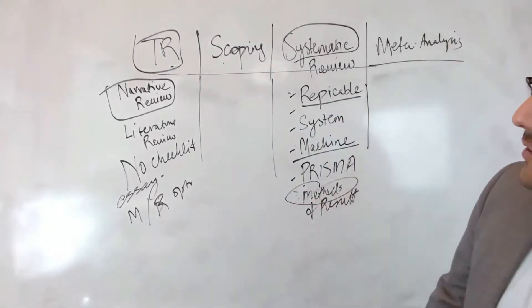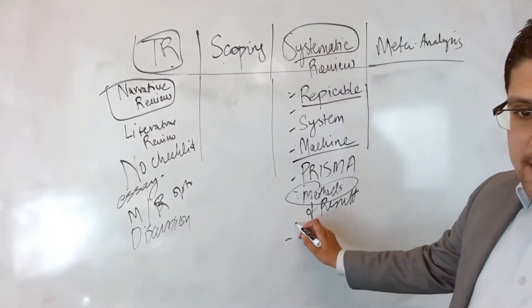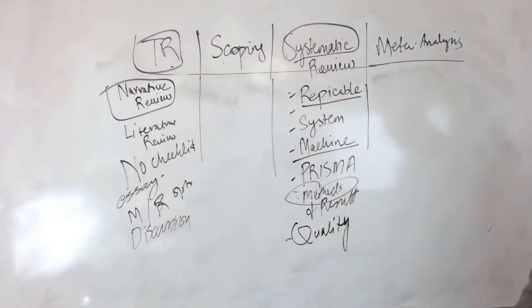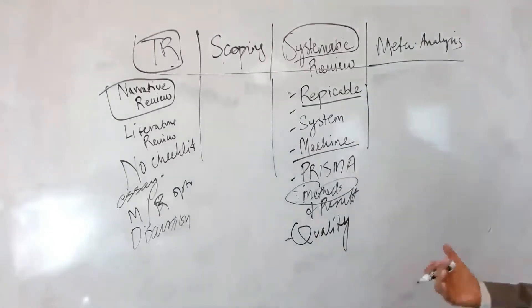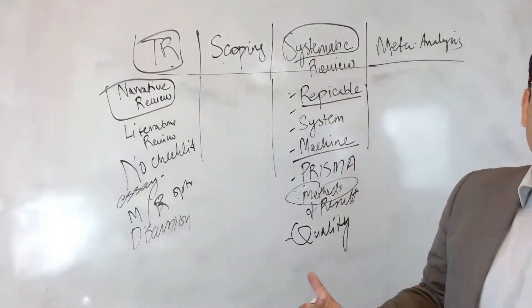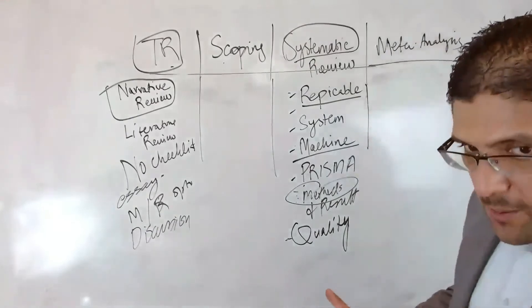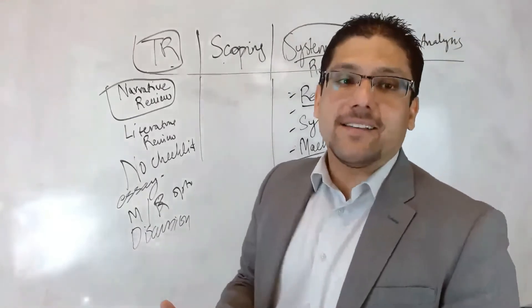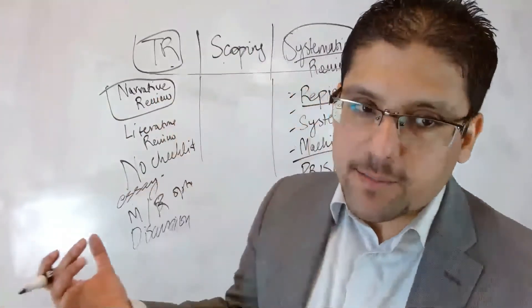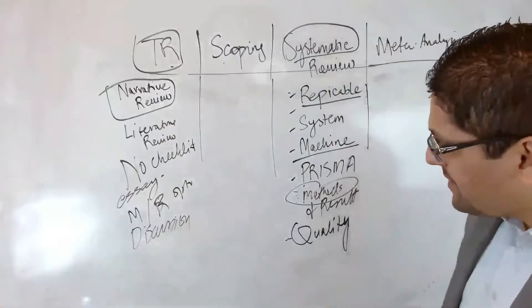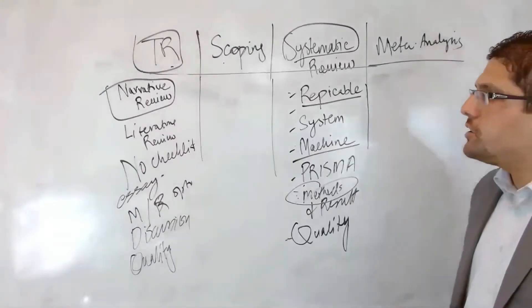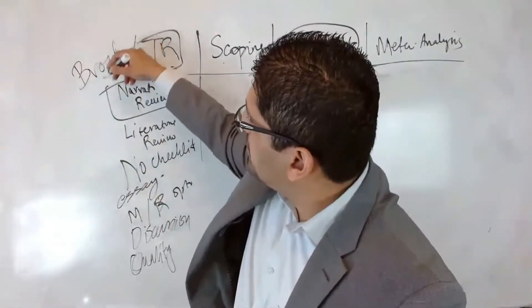The real focus in a systematic review is the method, while in a traditional review the real focus is the discussion. In a systematic review, you check the quality of each included study — keeping strong studies and removing weak ones. Remember this line: a systematic review is only as good as the studies it contains. That is why we check quality in systematic reviews but not in traditional reviews.